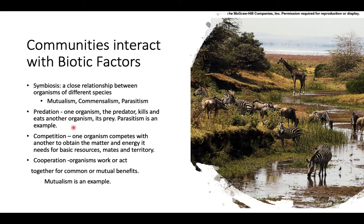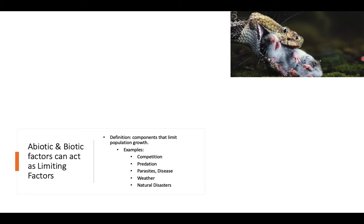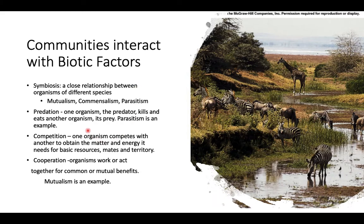Communities can also interact with other biotic factors in different ways, including predation. Predation means one organism — the predator — kills and eats another organism. Parasitism is actually a form of predation, as we saw with the wasp eggs feeding on the caterpillar until it dies. Another example of predation is the snake feeding on a mouse — the predator killing its prey.